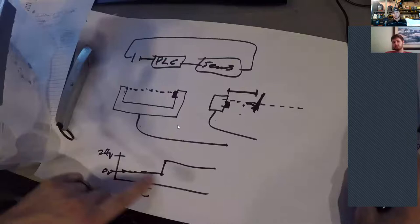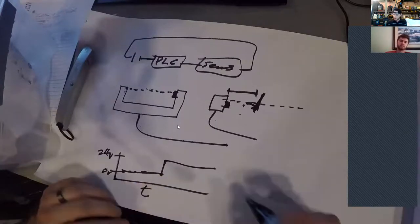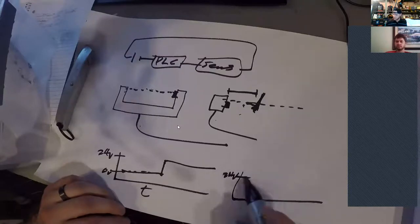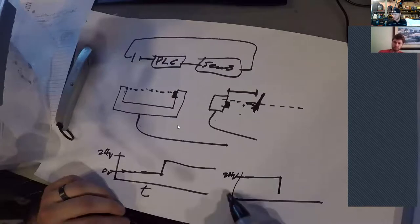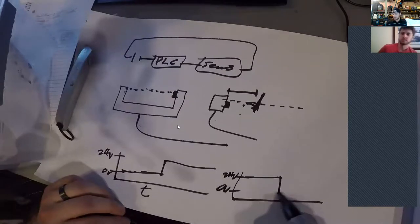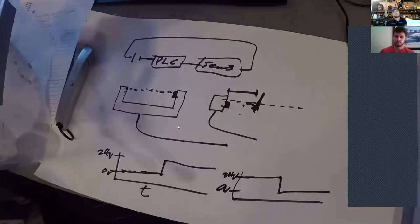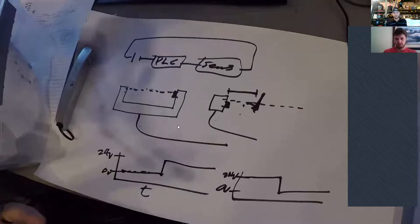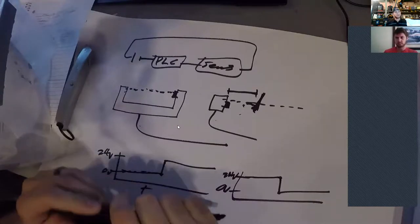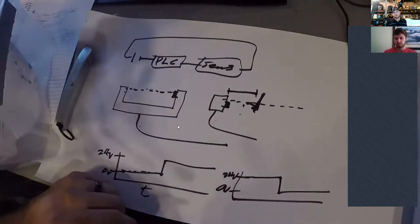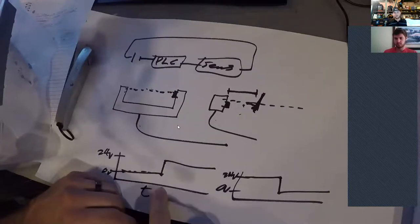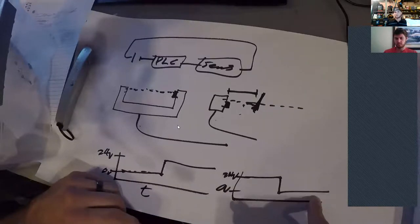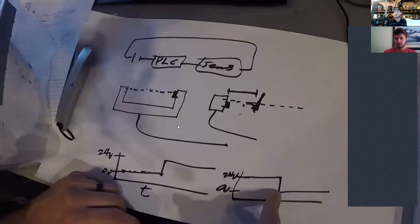So you could also kind of think of that as normally open. Alternatively, you can have it set to where that signal is normally high and when it gets blocked, it drops down to zero volts off. So depending on what you're doing, you want to set that sensor to be normally high or normally low.